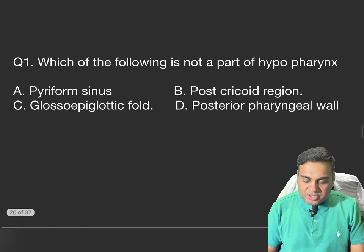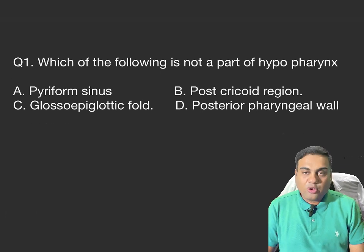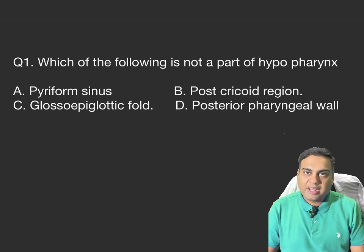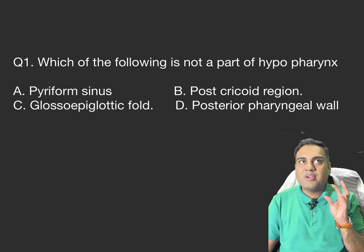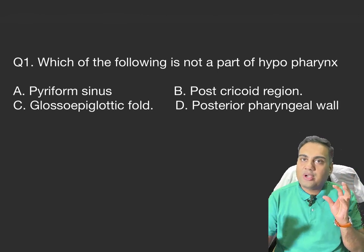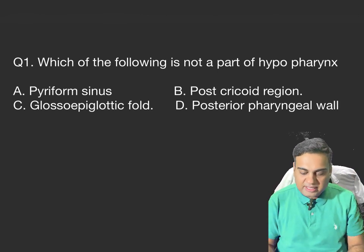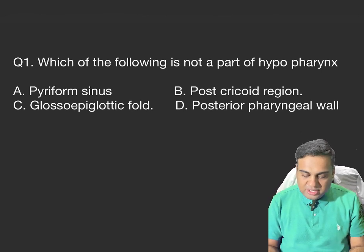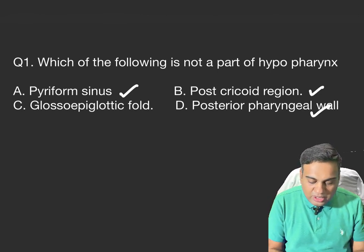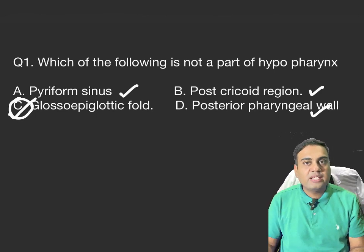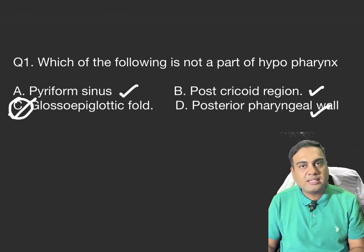First question: which of the following is NOT a part of the hypopharynx? Before seeing the options, picture hypopharynx: piriform fossa, posterior pharyngeal wall, post-cricoid region. The options are piriform fossa, post-cricoid region, glosso-epiglottic fold, and posterior pharyngeal wall. Piriform fossa, post-cricoid, and posterior pharyngeal wall are all parts of hypopharynx — so the correct answer is C: glosso-epiglottic fold.